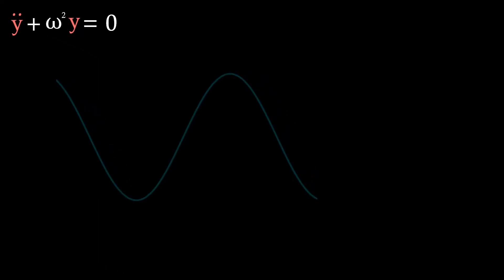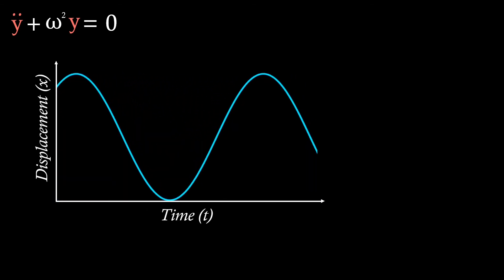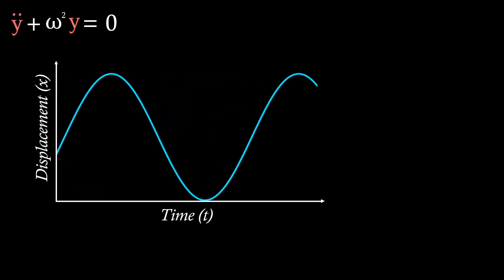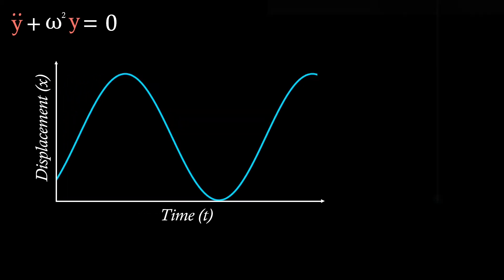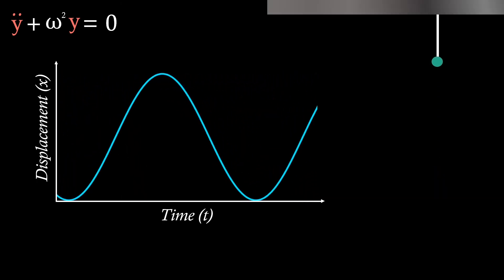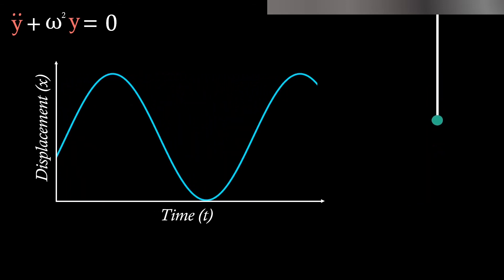So what does this look like? Well, if we look at a graph like this, where we've got time across the x-axis and displacement across the y, we see that we have a nice oscillation. What this actually means is that this mass at the bottom of our string oscillates up and down for infinite time, as there's nothing to reduce these oscillations.